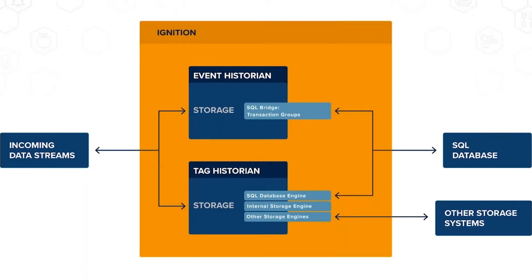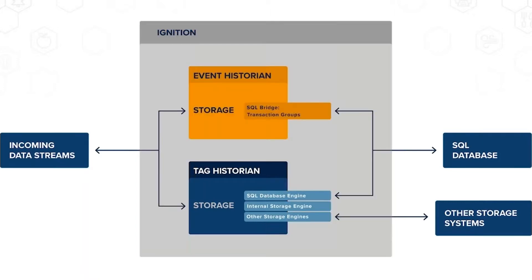Once data gets to Ignition, you can choose what to do with it. At the top there's the event historian, and that blue box mentions SQL Bridge transaction groups — the typical way to do event logging inside Ignition. If you have a specific event to trigger on, like a batch run finishing or a piece of luggage moving from one spot to another, and you want a record for later reporting or time-based aggregations, the event historian handles that. Those event historian records are often paired on dashboards with tag historian information streaming in real-time.